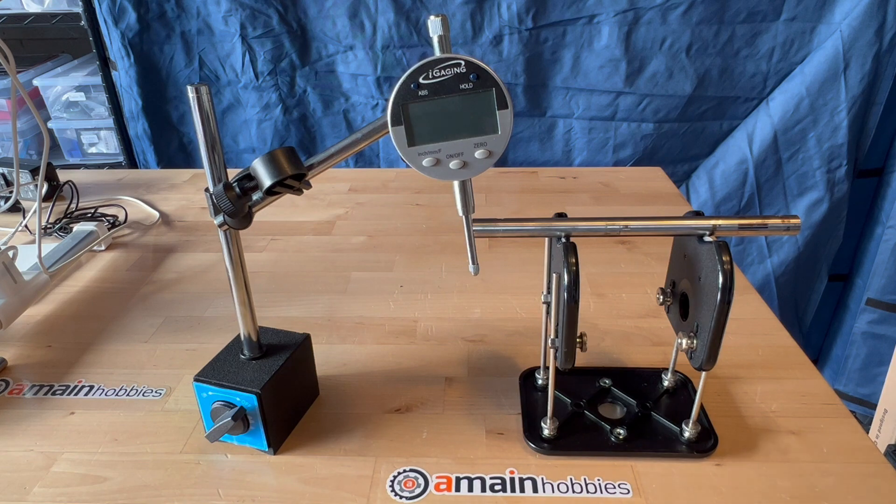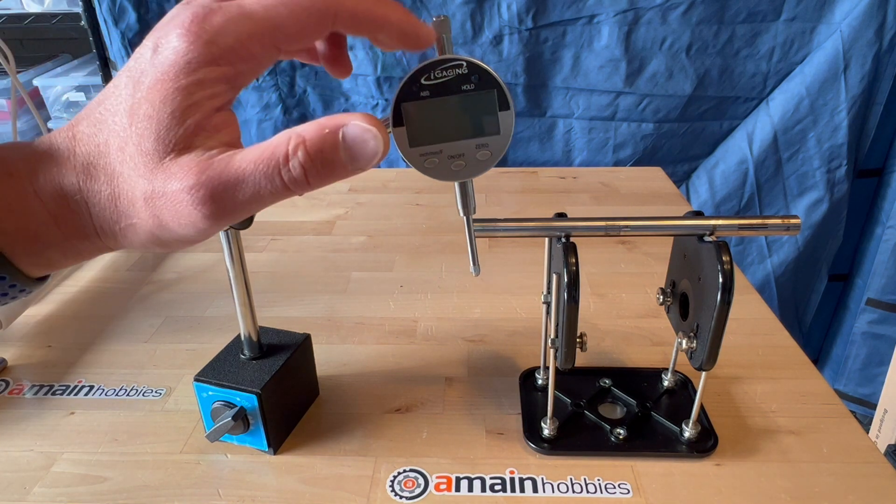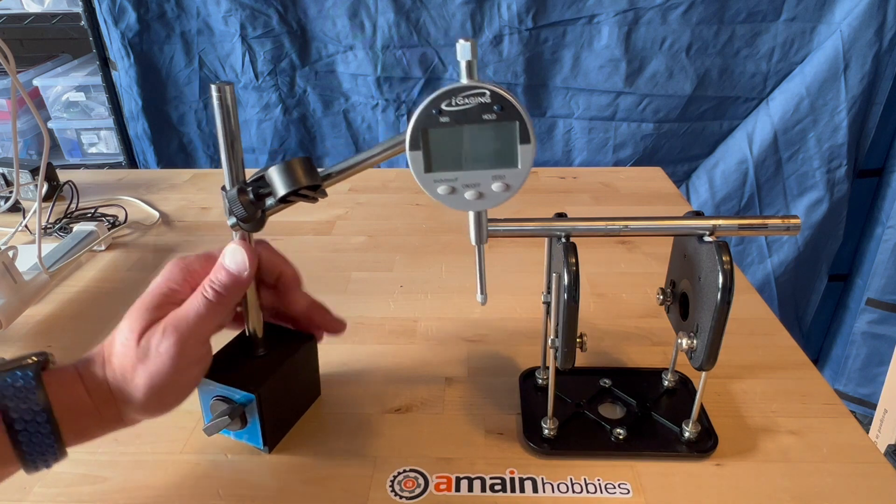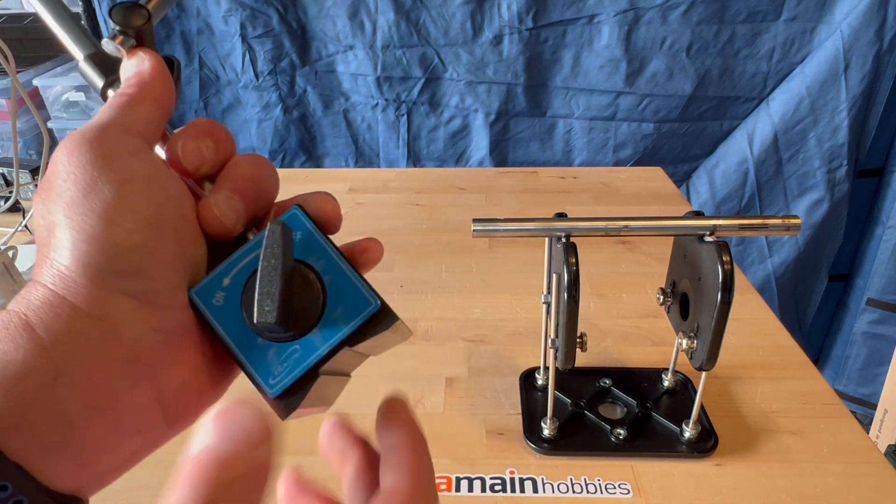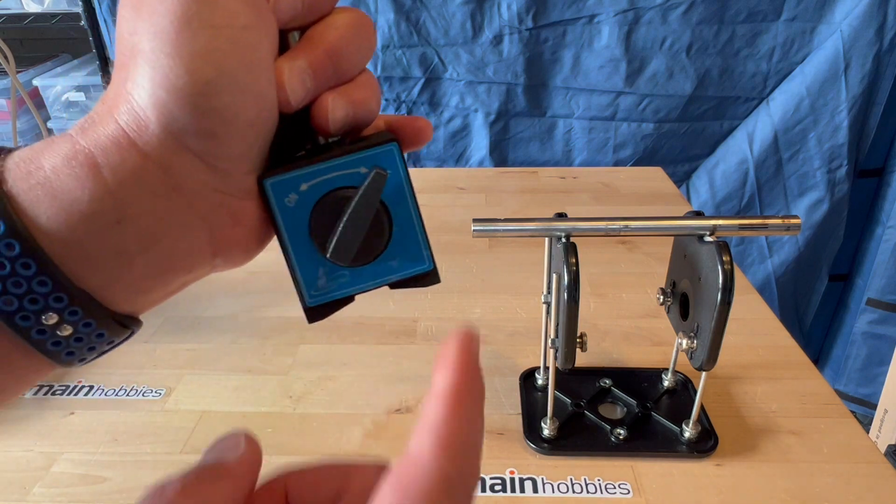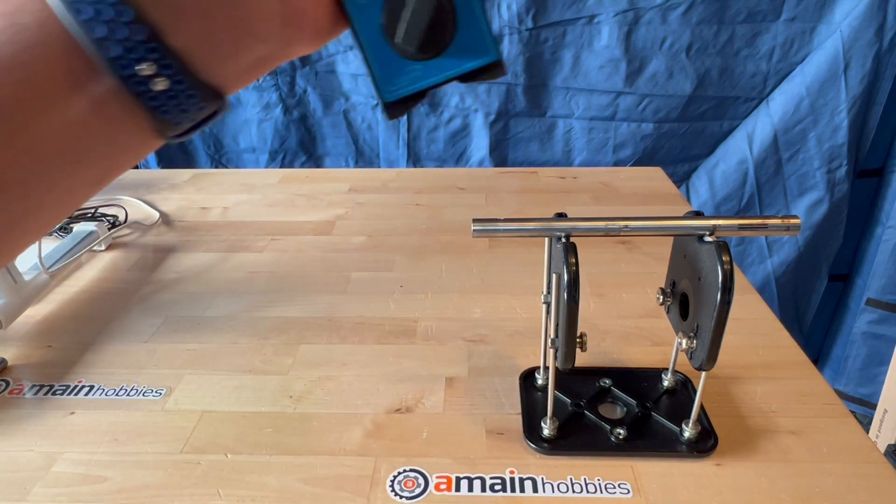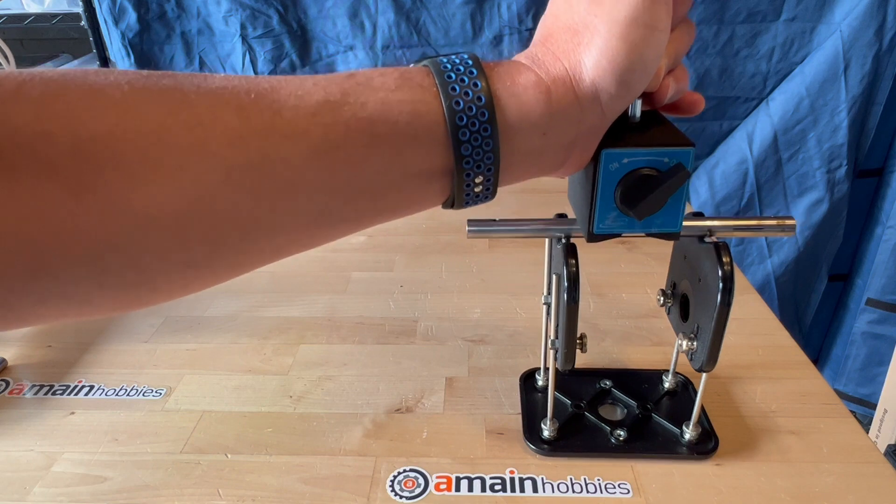If you really want to geek it out, you can always use a dial indicator. So a dial indicator basically has its own base. The base usually has some sort of magnetic attachment that just attaches to anything that's metal.